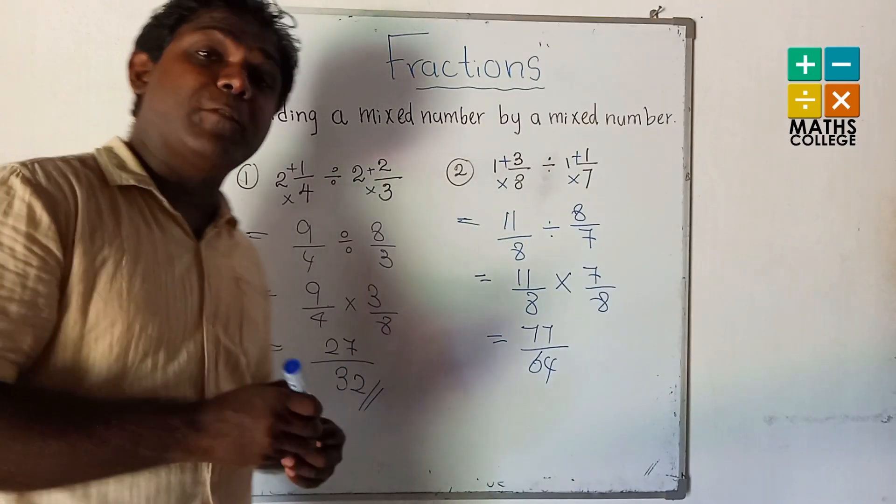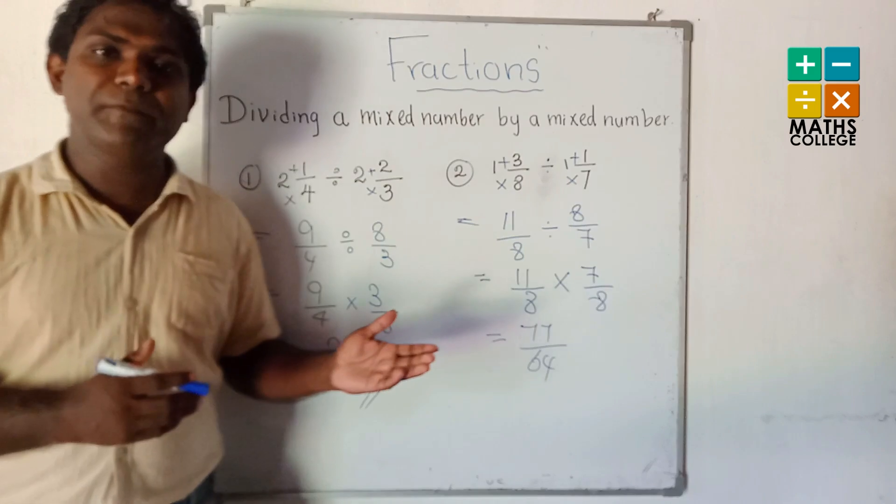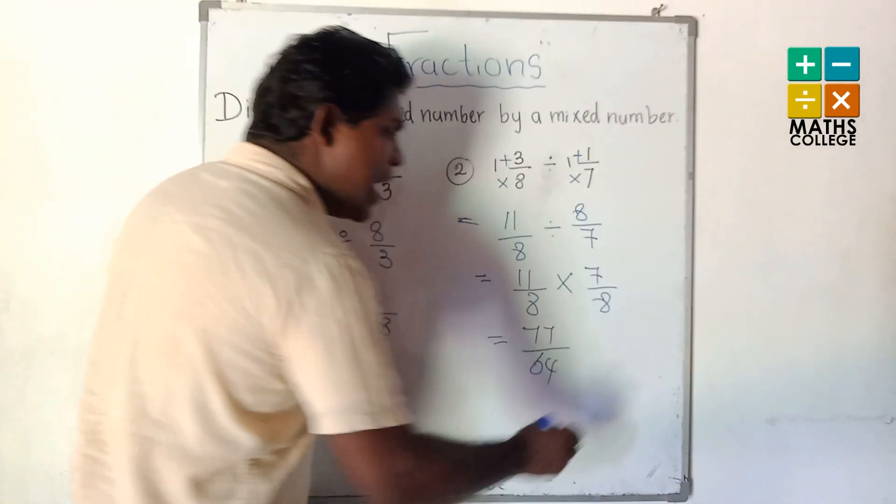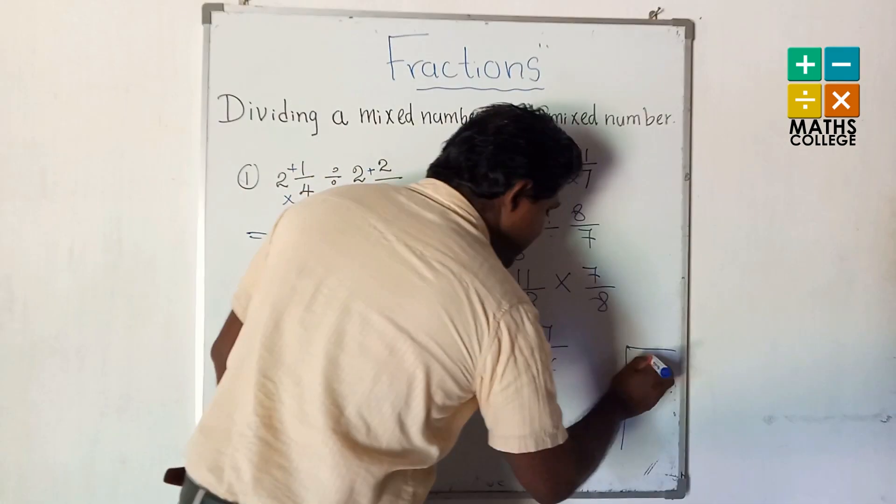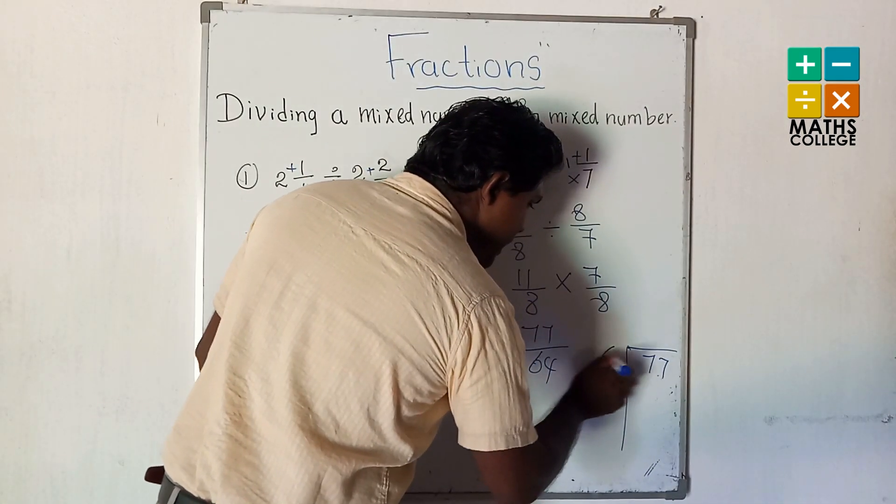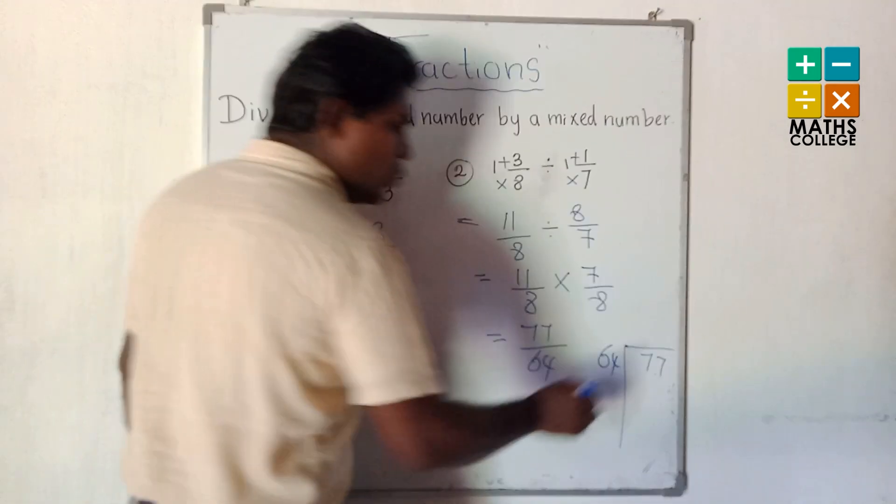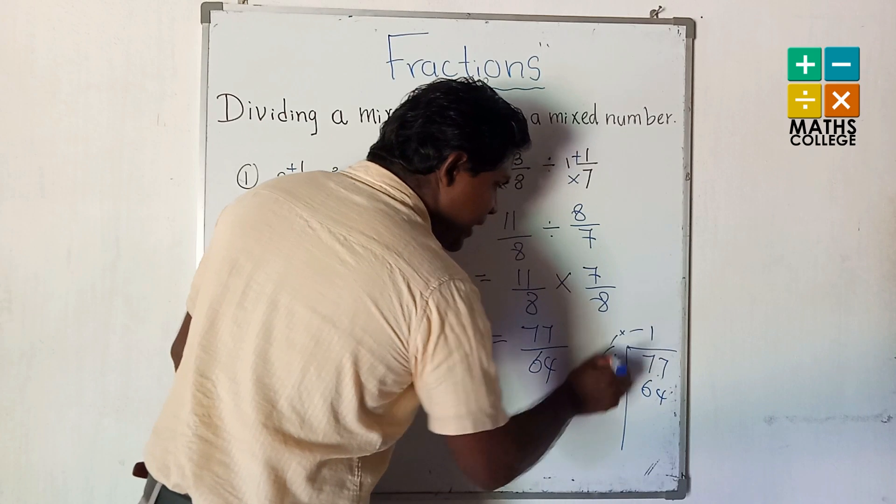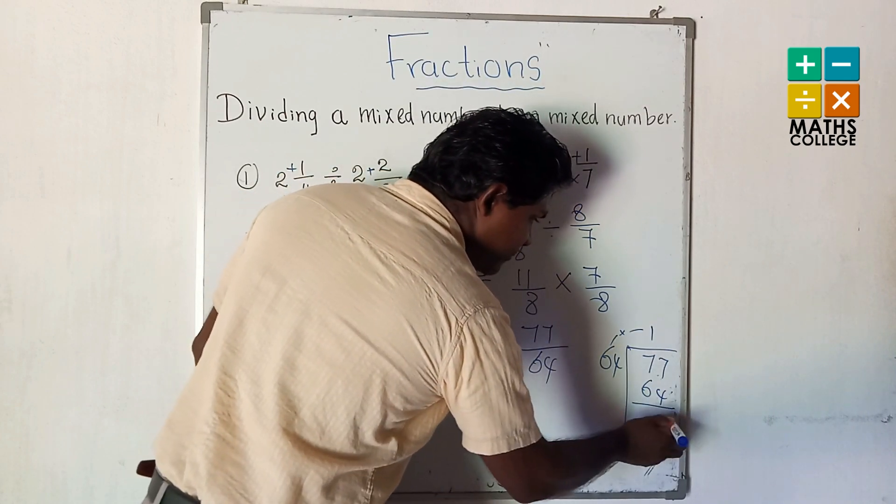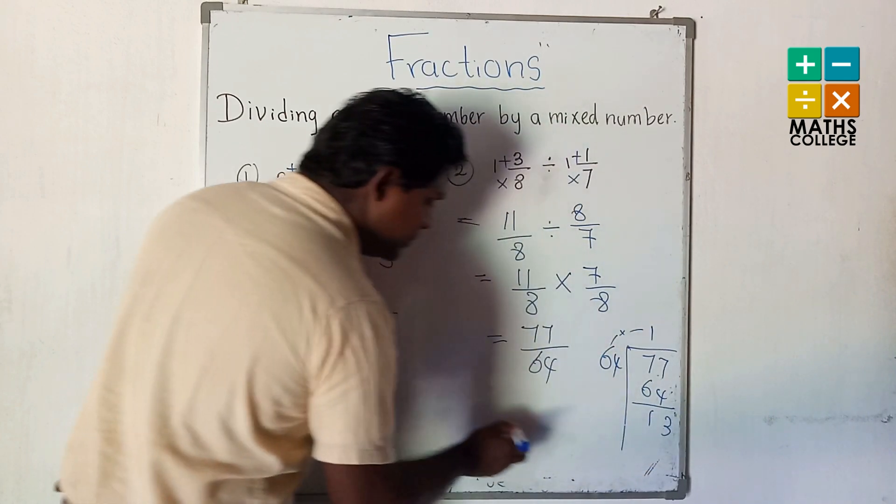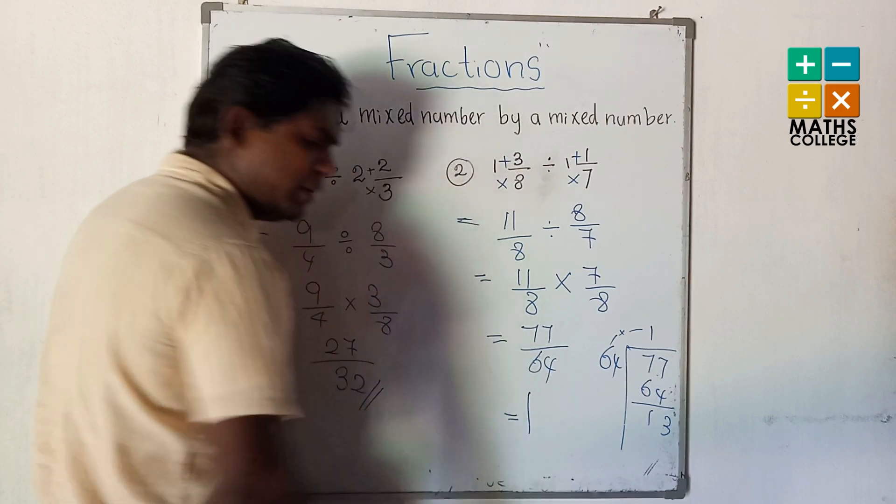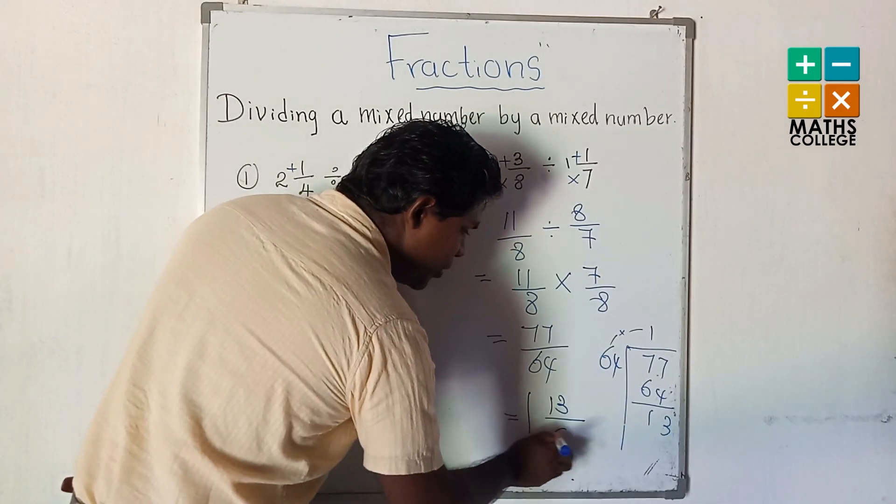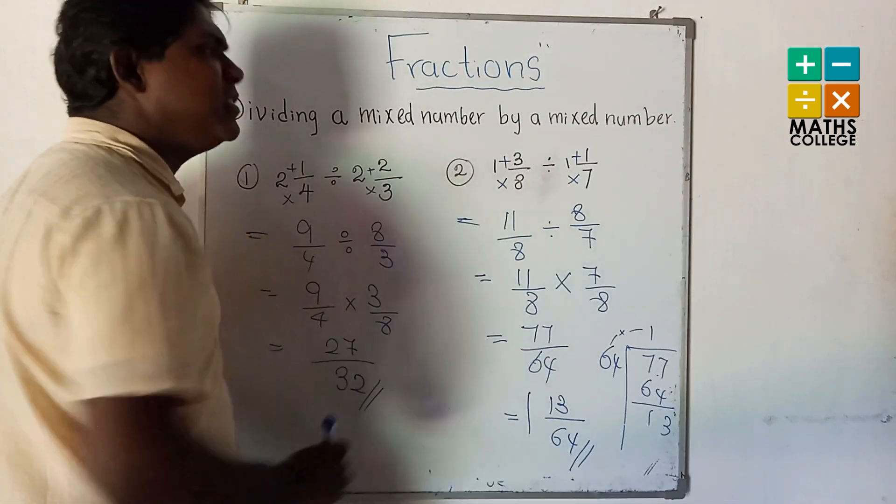What is this type of fraction? Improper fraction, 77 upon 64. We have to write the answer as a mixed number. 1 times 64 is 64, subtraction gives 13 as remainder. Answer is 1 and 13/64. The denominator is not changed.